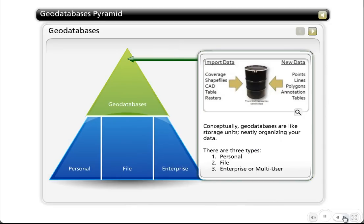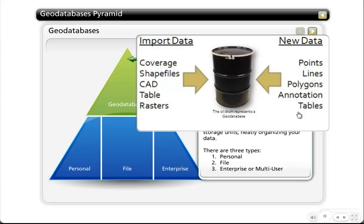Let's explore geodatabases. When I describe a geodatabase, I really like to talk about it as a container. In ArcCatalog it looks like a little drum — think of a giant 55-gallon oil drum. In this container you can do a number of different things: you can import any previous ESRI spatial data format such as a coverage or a shapefile, import CAD drawings from AutoCAD or MicroStation, and add tables and rasters. In addition to bringing in existing data, you can create new data — new points, lines, or polygons, annotation feature classes, and new tables. Into this container, you can put an awful lot of stuff.